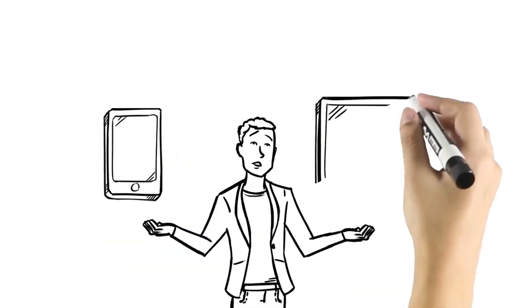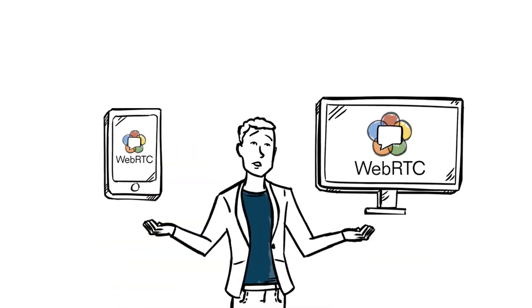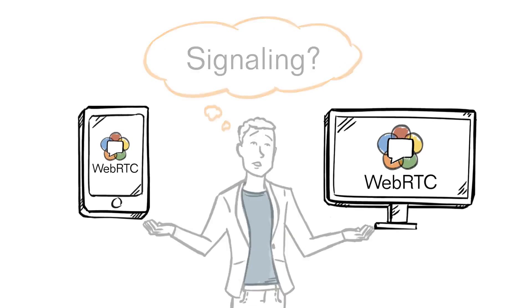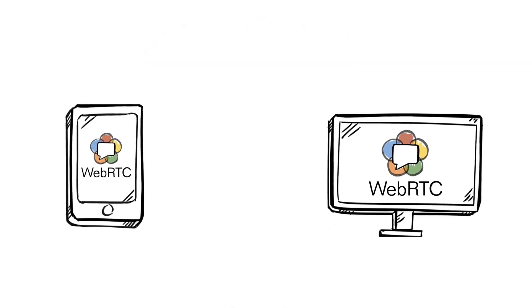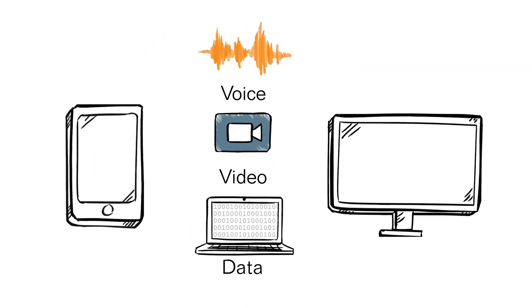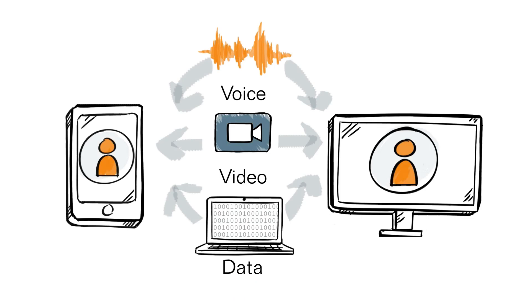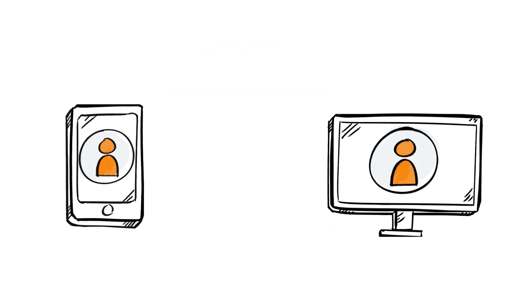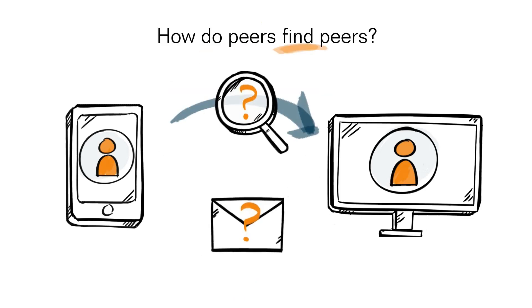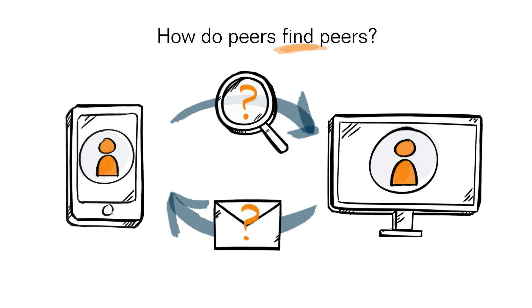As you build a web or mobile app with WebRTC, you'll find you need signaling. WebRTC provides APIs to get your app sending voice, video, and data from peer-to-peer. But how do peers find peers? How does a peer invite another peer to communicate?